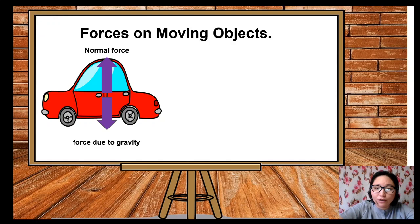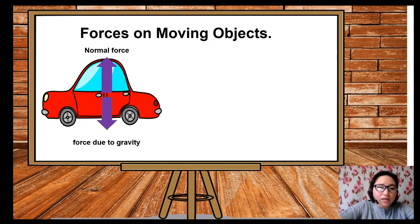How about the forces on moving objects? Say for example, this car is parked on the side of the street, so it is not moving. The two forces that act on it are gravitational force, or force due to gravity, and normal force. So it won't move.